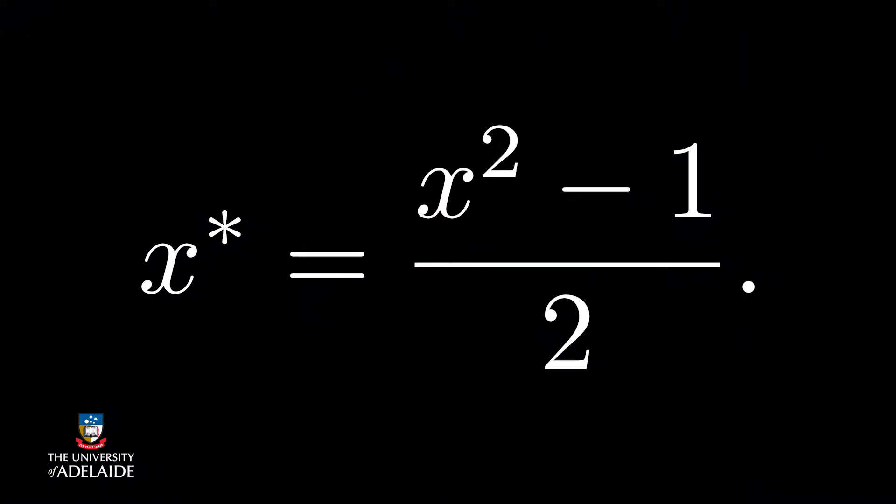Why use English when Greek is so much cooler? That parameter lets us control what type of transformation is done. For example, when lambda equals 2, we get x star equals x squared minus 1, all over 2. So we have a square transformation. By changing lambda, we can get any power transformation that you might want.